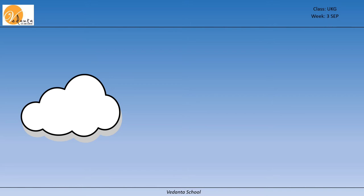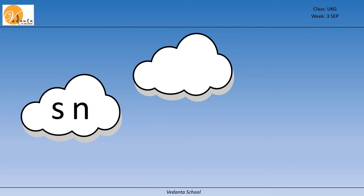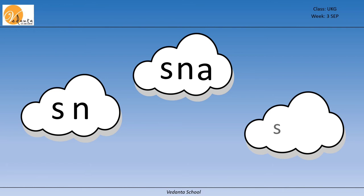Here we are going to see the consonant-consonant blend. The first one: s, n — sn. And when a vowel comes after the blend, what is the sound? It makes sn, a. And if the vowel i is introduced, then the sound changes: sn, i.